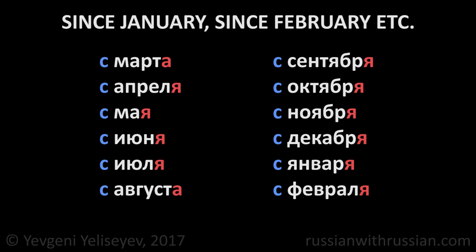As usual, the names of spring and summer months don't change the stress. С марта – since March, с апреля – since April, с мая, с июня, с июля, с августа.